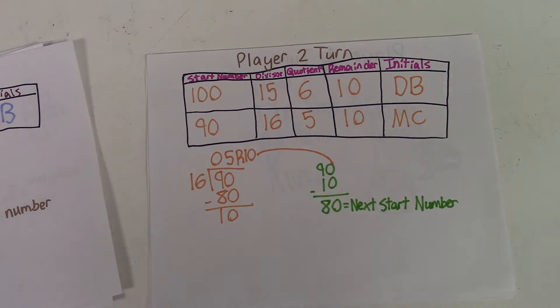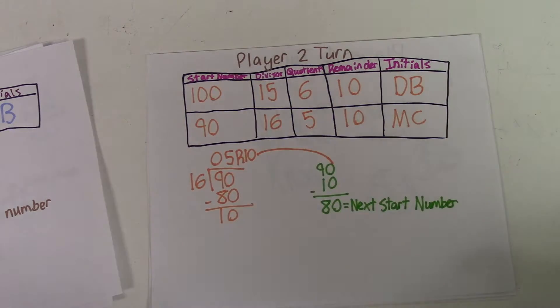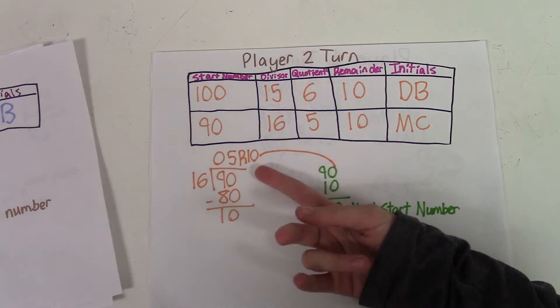Player 2's turn is a little bit different. The last player's turn subtracted their remainder, and that would be your start number. So my start number is 90. I chose 16 as my divisor, and I got a quotient of 5 and a remainder of 10.